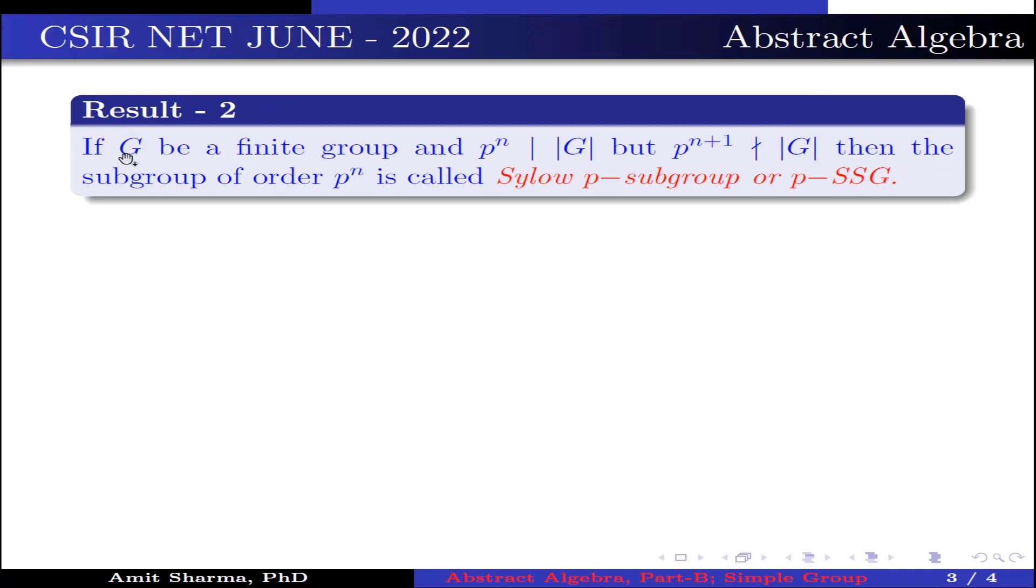Result number 2: If G be a finite group and p to the power n divides order of G, but p to the power n plus 1 does not divide order of G, then the subgroup of order p to the power n is called Sylow p-subgroup or p-SSG.